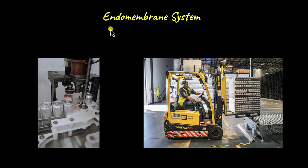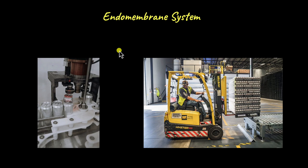The different organelles that make up the endomembrane system may be directly linked to one another, forming a structural — that is, a physical — linkage between two organelles. Or they may be functionally linked to one another with the help of vesicles, which we will get to in just a while.